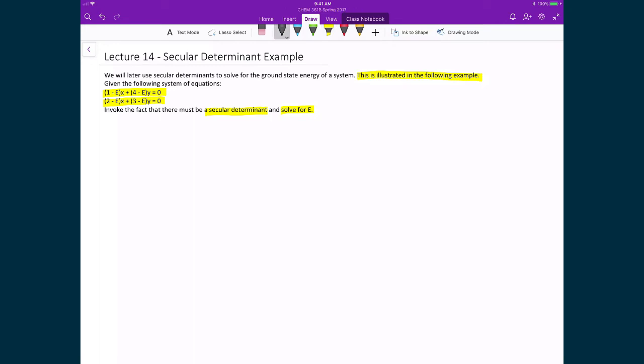To solve for this, we're going to write our constants as a matrix: 1 minus e, 4 minus e in the first row, 2 minus e and 3 minus e in the second row, bounded by vertical lines. That equals (1 minus e)(3 minus e) minus (4 minus e)(2 minus e). Because this is a secular determinant, we set it equal to 0.